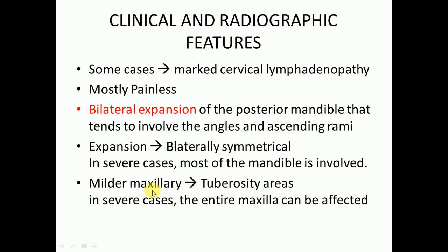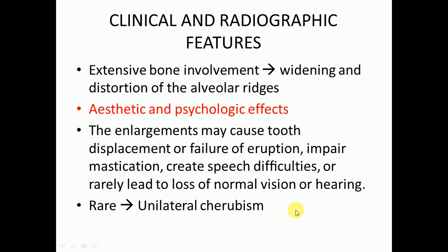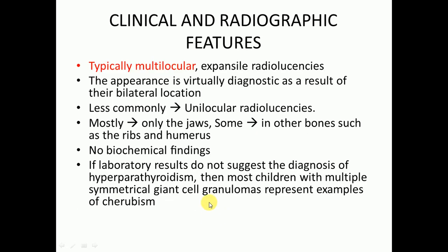In severe cases, most of the mandible is involved. In milder cases involving the maxilla, there is swelling or expansion over the tuberosity areas. In severe cases the entire maxilla can be affected. Extensive bone involvement leads to widening and distortion of the alveolar ridges, tooth displacement or failure of eruption, impaired mastication, speech difficulties, and in very rare cases loss of normal vision or hearing. Unilateral cherubism is rare; most cases are bilateral.